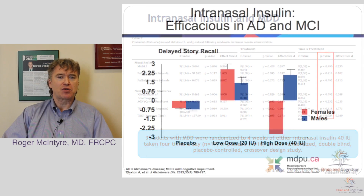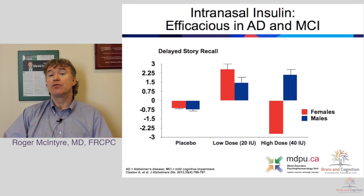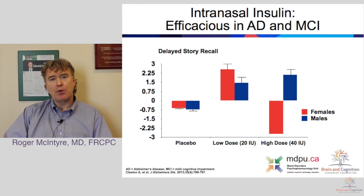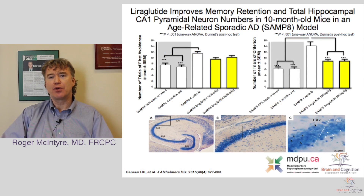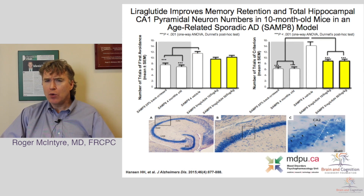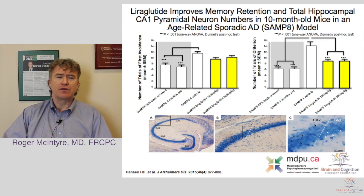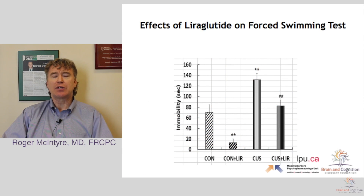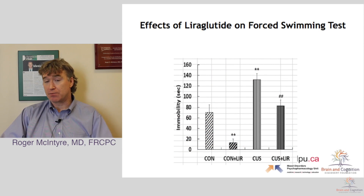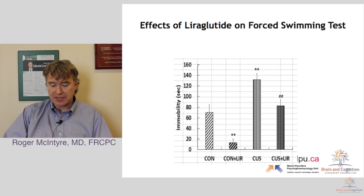Suzanne Kraft and colleagues have demonstrated that intranasal insulin can improve cognitive function in mild cognitive impairment and people with early Alzheimer's disease, particularly those who are ApoE negative — a very interesting finding. Earlier I mentioned liraglutide and its potential brain therapeutic role. It has been shown to have potent trophic and neurogenic effects in a variety of animal models, including Alzheimer's models. A colleague in Korea has demonstrated that liraglutide in an animal model is not just pro-cognitive but actually behaves as an antidepressant.